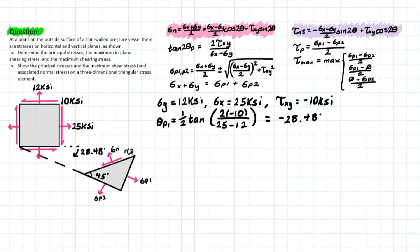Now we can see the triangular stress element based on the orientation created by theta_p. On this element we can clearly see the principal stresses p1 and p2, and confirm there is no shear stress on these faces. The difference between theta_p and theta_s is 45 degrees, which lets us take a cut at 45 degrees from the principal plane to get the max in-plane shear plane. Now we have the critical values and can proceed to solve the problem.